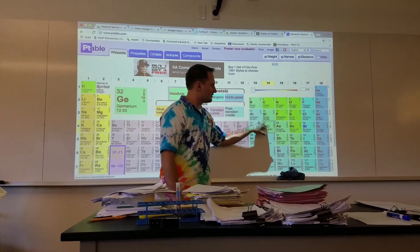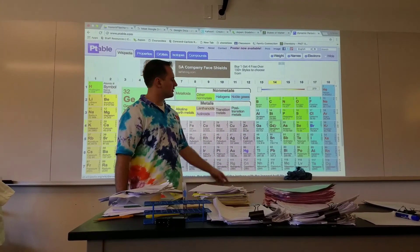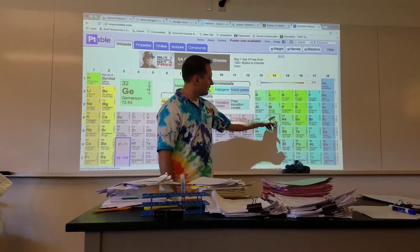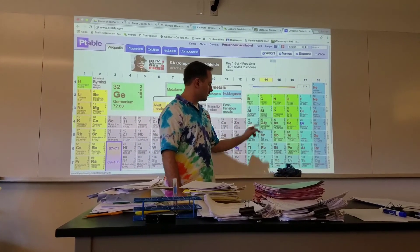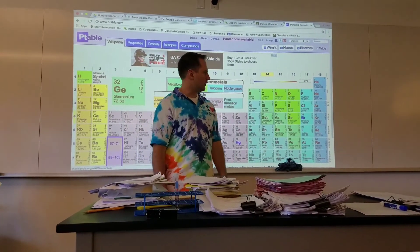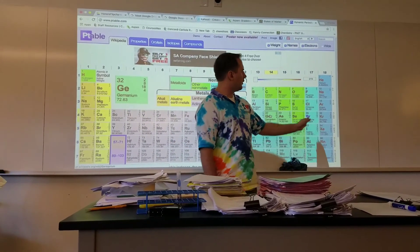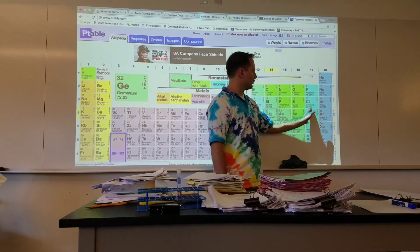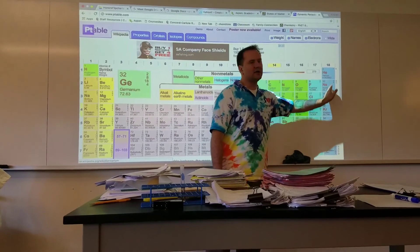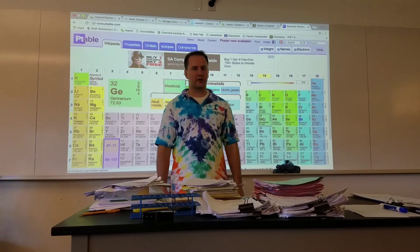These over here, underneath this staircase, are considered the poor metals. And right along the staircase, with the exception of aluminum, would be the metalloids. The only other really common groups that you need to know are the halogens, which are fluorine, chlorine, bromine, and iodine, and the noble gases, which don't react with anyone.